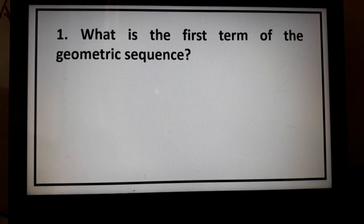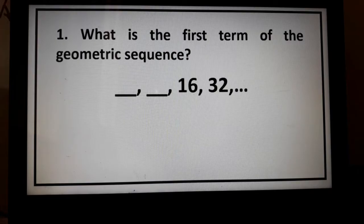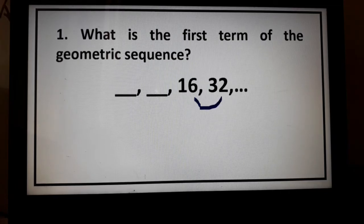Example number one. What is the first term of the geometric sequence: blank, blank, 16, 32? Notice that in this given problem, we have two consecutive terms. When we have consecutive terms, it's easier to get the common ratio. So, 32 divided by 16 is equal to 2.